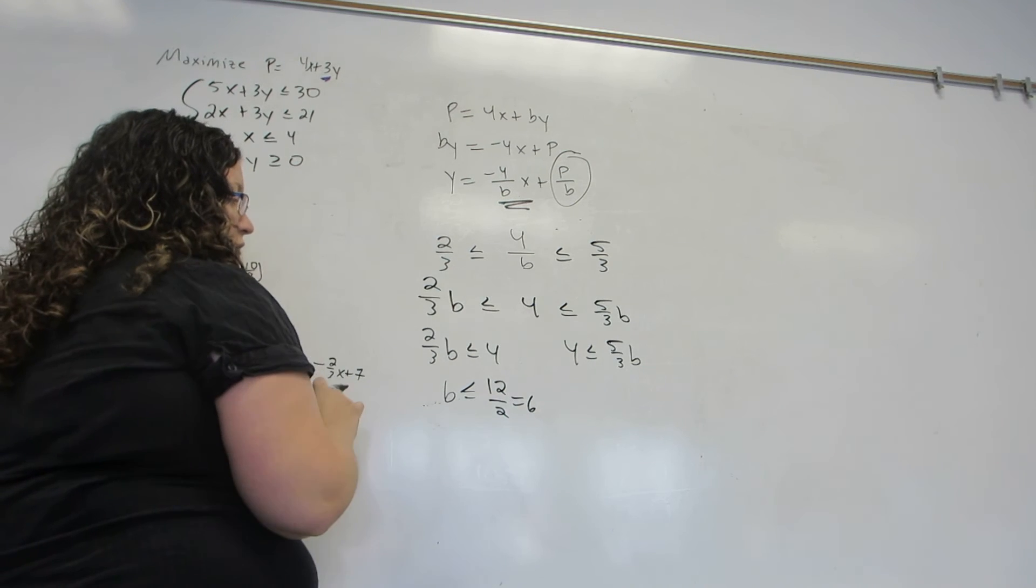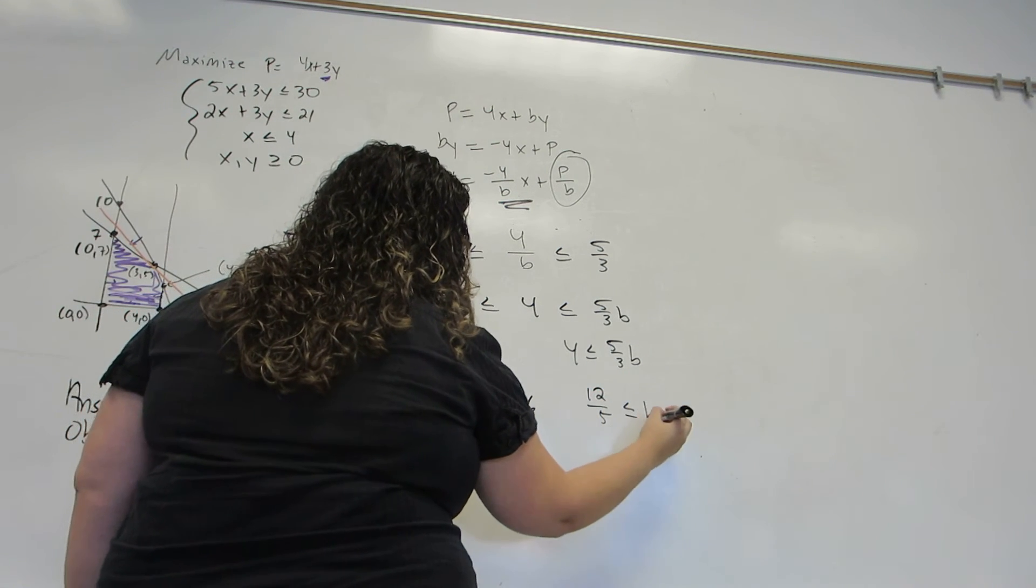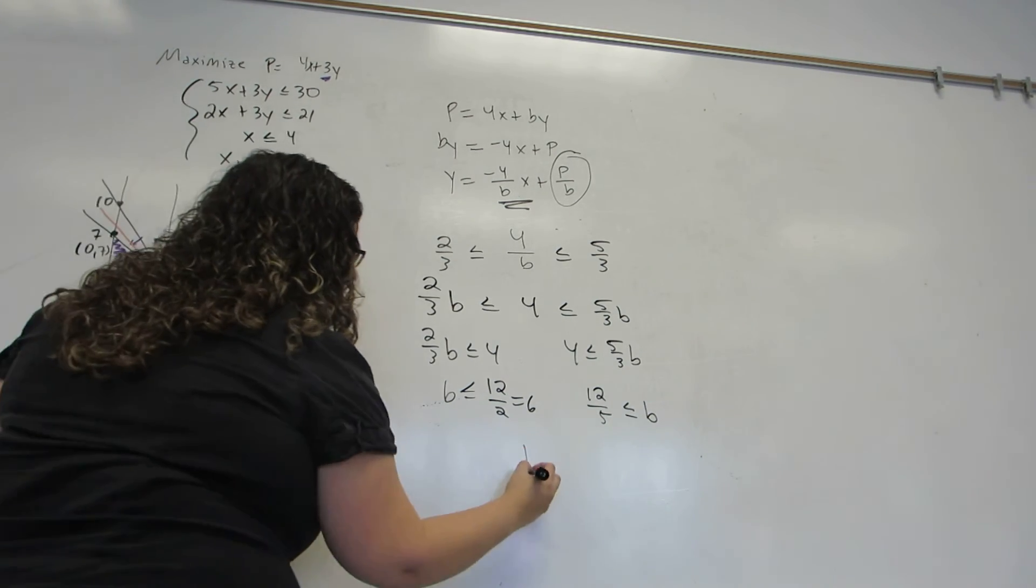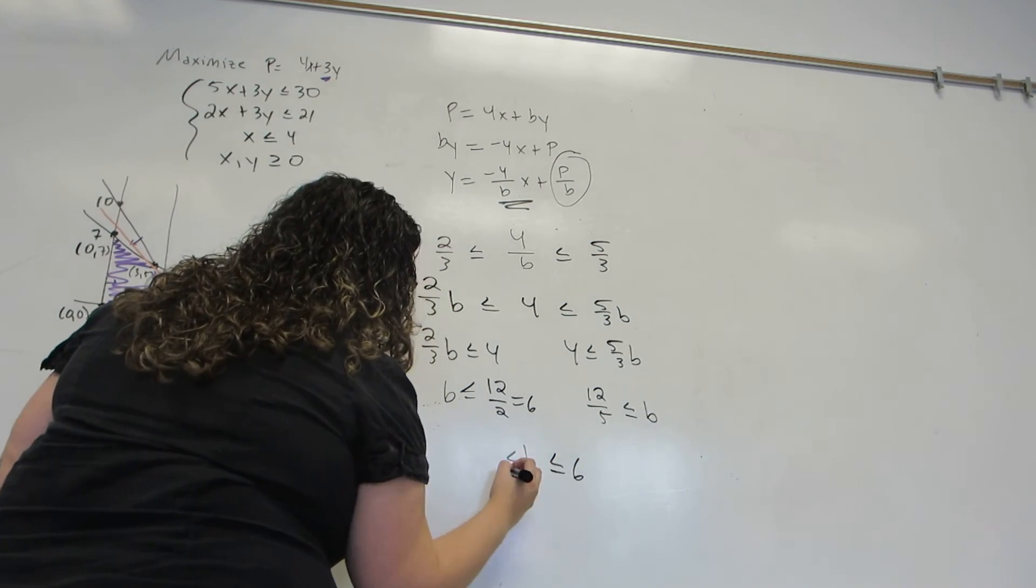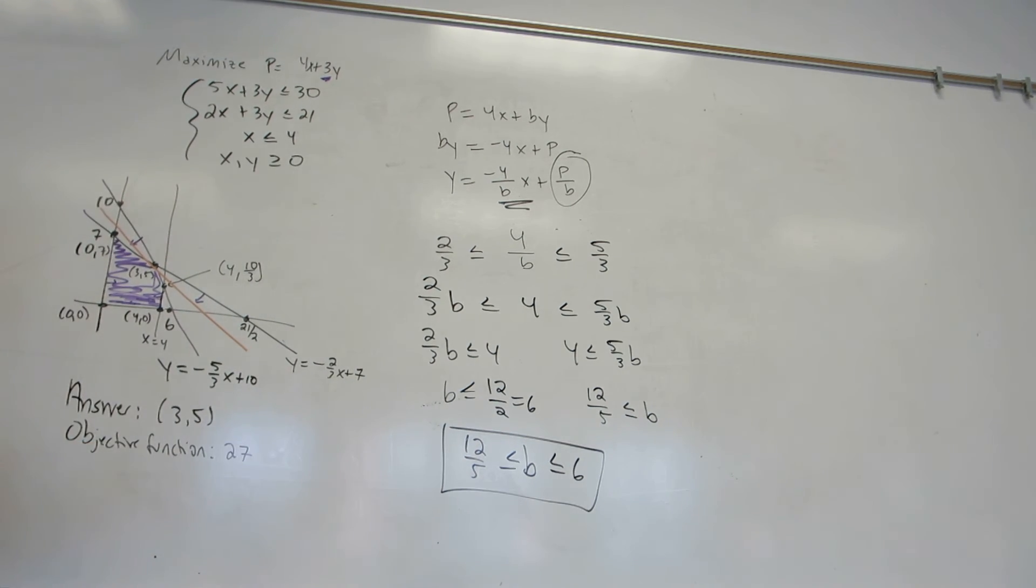So I get b is less than or equal to 6. And over here, I get b is greater than or equal to 12 fifths. You can now turn this back into a single inequality. The b must be between 12 fifths or 2.4 and 6.